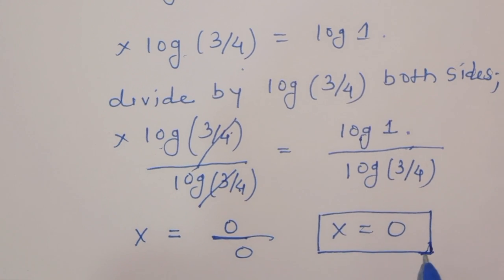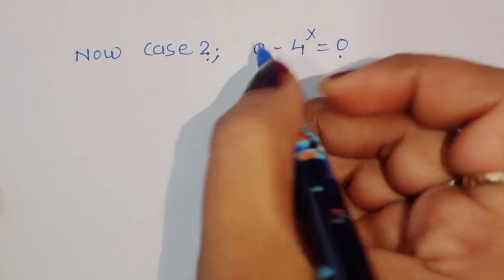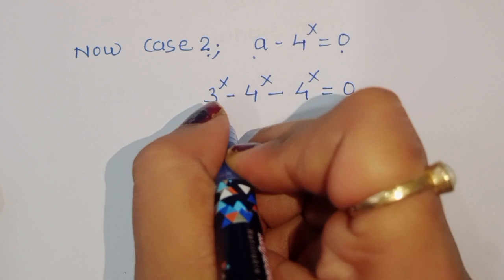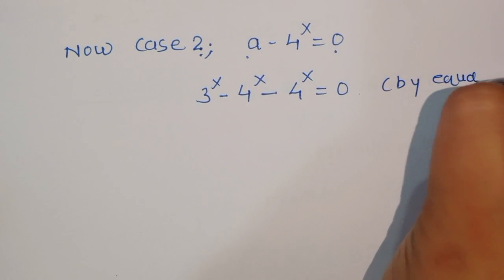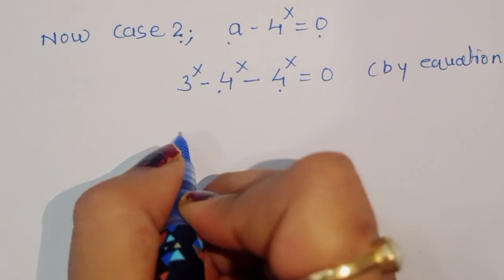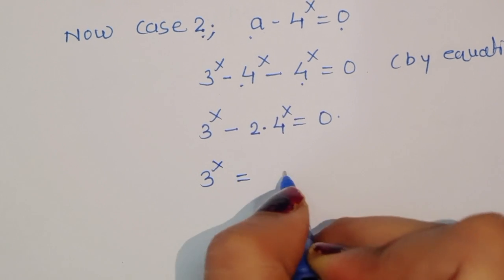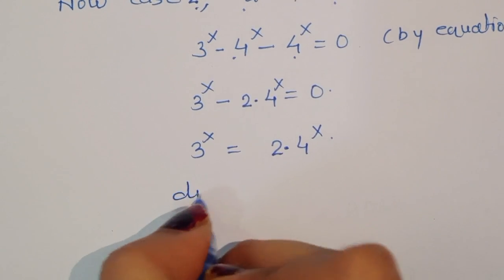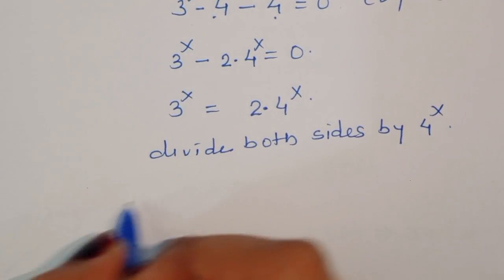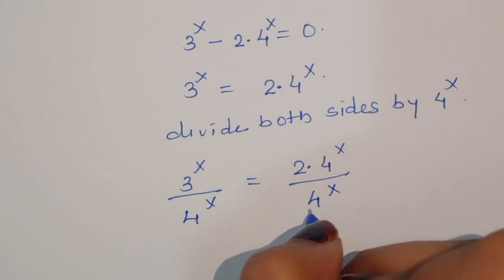For the second solution: A minus 4^x equals 0. Substituting A equals (3^x minus 4^x) from equation 1, we get 3^x minus 4^x minus 4^x equals 0, which simplifies to 3^x minus 2 times 4^x equals 0. So 3^x equals 2 times 4^x. Dividing both sides by 4^x, we get (3/4)^x equals 2.